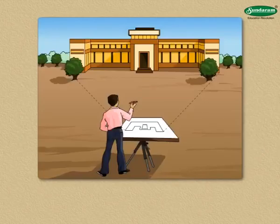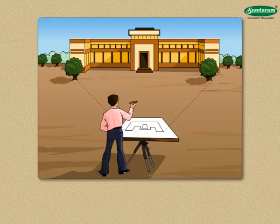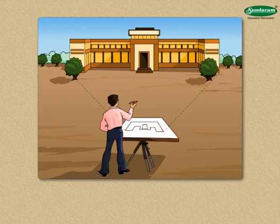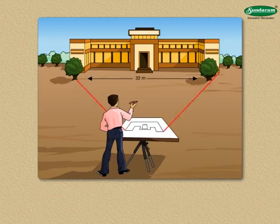The ground distance between two places is shown on a map with the help of a proportionate shorter distance. This figure shows a surveyor preparing a map of an area. The picture shows the ground distance between two trees in front of a building and also the map distance between the same two trees on the surveyor's board.